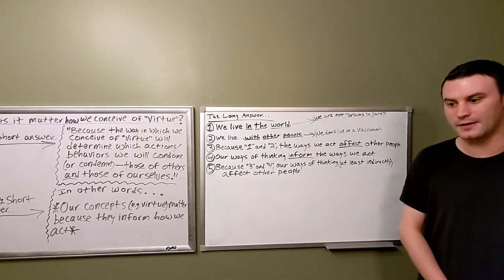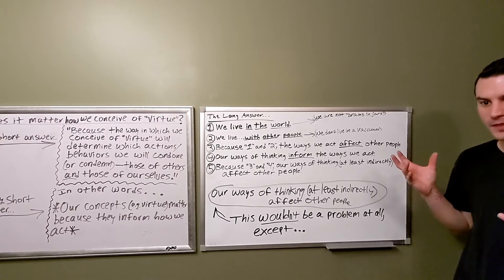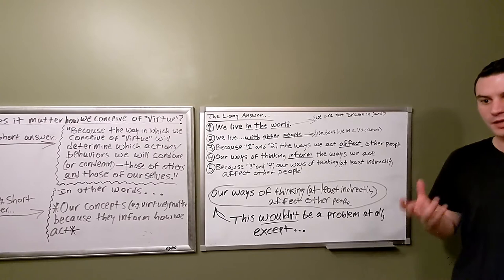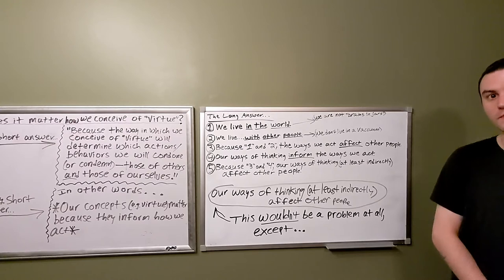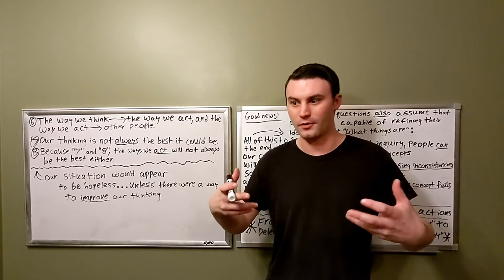So by extension, the way that we think influences how we act towards others, which is to say that our thinking indirectly affects other people. Now, of course, the focus of this talk is philosophical problems, what problems give rise to philosophical concepts. The mere fact that our thinking affects other people, albeit indirectly, on its own doesn't really seem to pose much of a problem at all. And in theory, it wouldn't pose a problem, except for what? Why does this become a problem? Or why could this become a problem in some cases? So the way we think influences the way we act, and the way we act affects other people. So there's a connection between how we think and our impact on others in the world. What's the problem with that? Or what could be the problem?